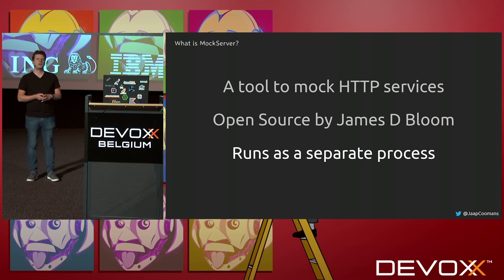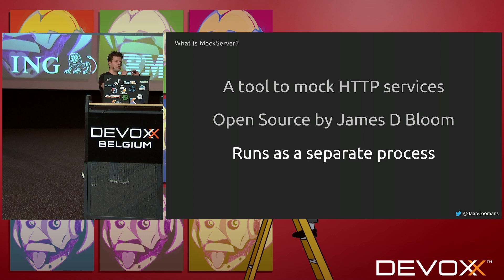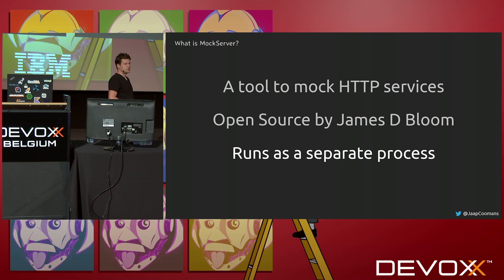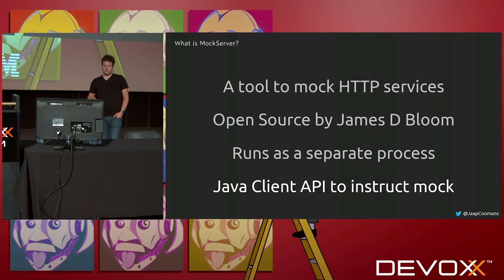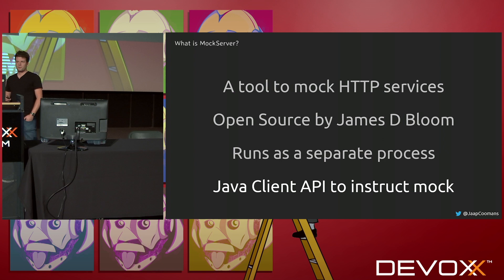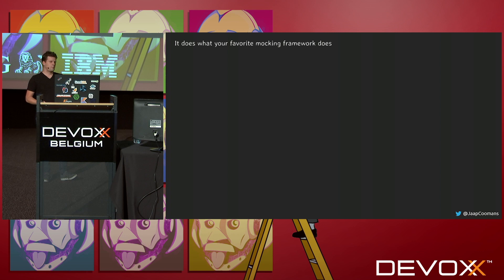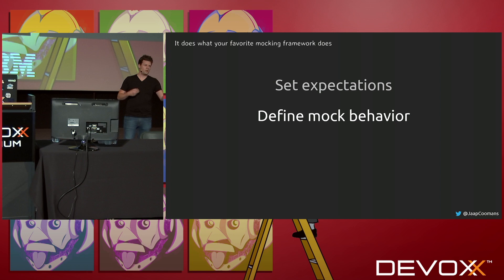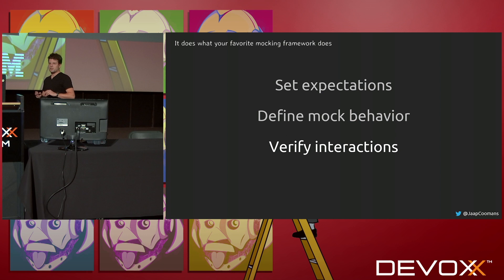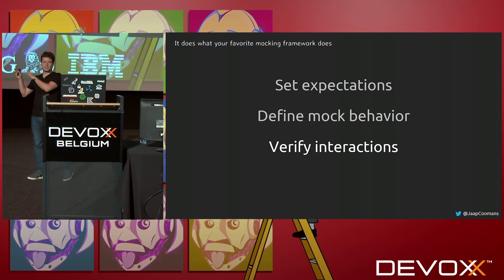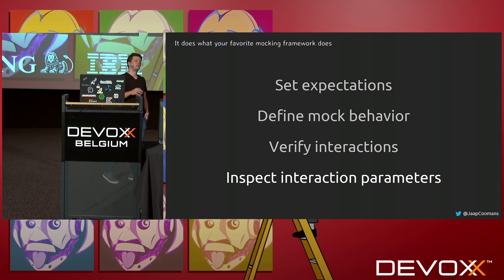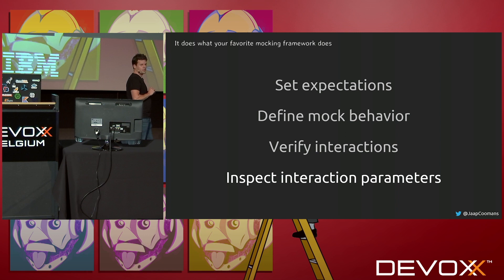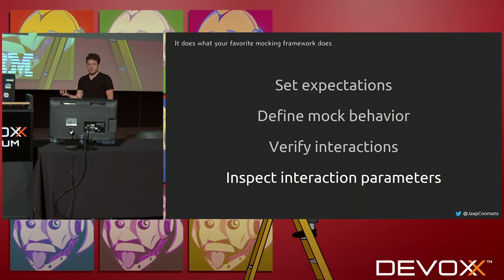Running as a separate process makes it interesting for mocking at a higher level of tests, where most other tools that allow you to mock REST services run inside the test process. You can instruct MockServer using a Java client API, giving you similar behavior as your standard mocking framework. With the client API you can set expectations — define the mock behavior, so 'if I get this, return that.' You can verify the interaction: has this endpoint been called with these headers and methods? And you can even inspect what was sent to the mock — not just that the endpoint was called, but what JSON document was actually sent.